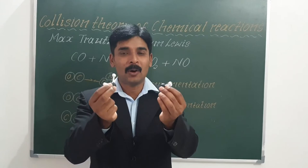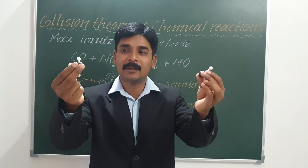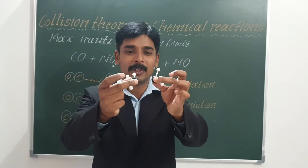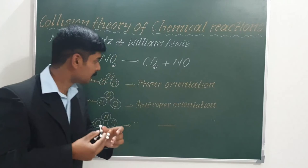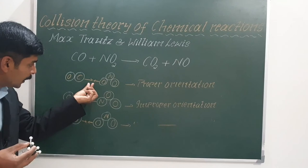If these reactant molecules approach and collide in the wrong way, they might bounce back and not lead to product formation. But when these reactant molecules collide with proper orientation, bond formation takes place between the two reactant molecules and this leads to product formation. In this example, for the bond to form between the carbon atom of CO and the oxygen atom of NO2, the carbon atom must collide with the oxygen atom — only then is this called proper orientation.